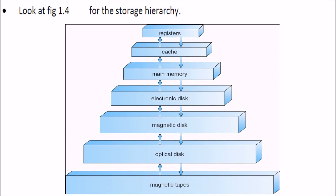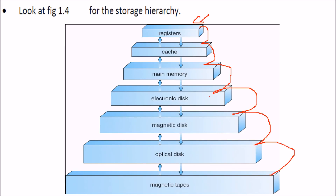The storage hierarchy starts with registers (combining bits to bytes to registers), then cache, main memory, electronic disk, magnetic disk, optical disk, and magnetic tape. Each level is backed by the next. This hierarchy gives a rough idea of the sizes and bandwidth at each level.